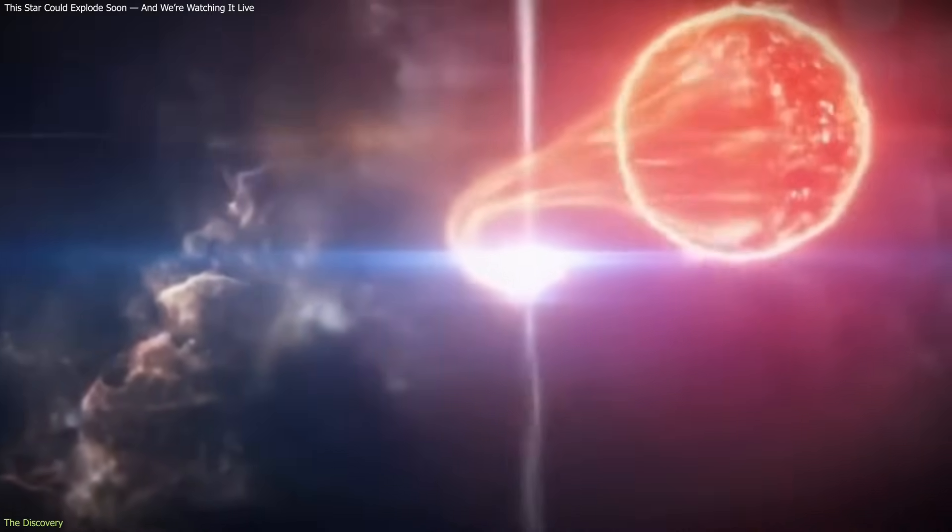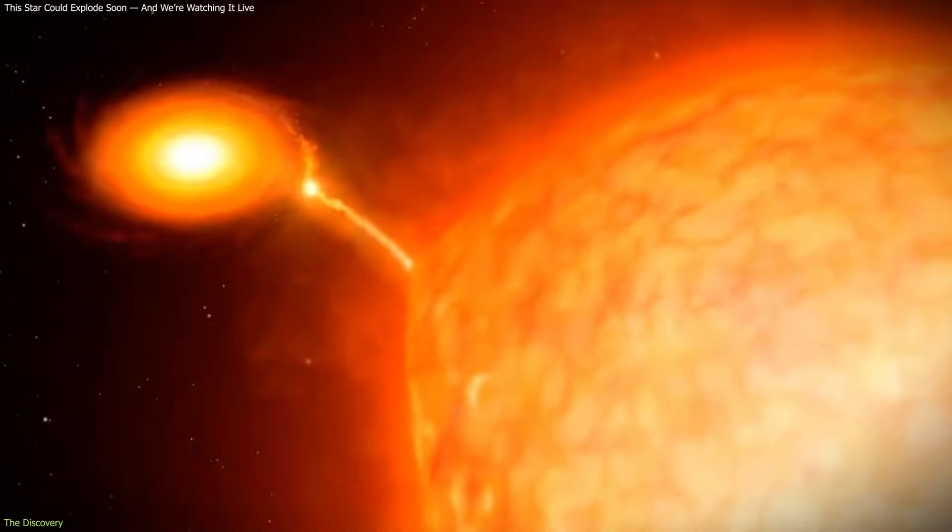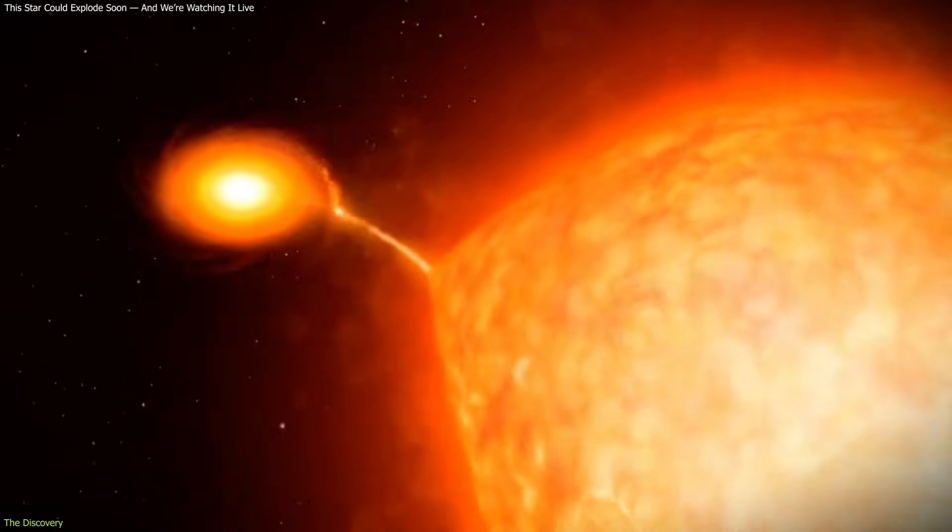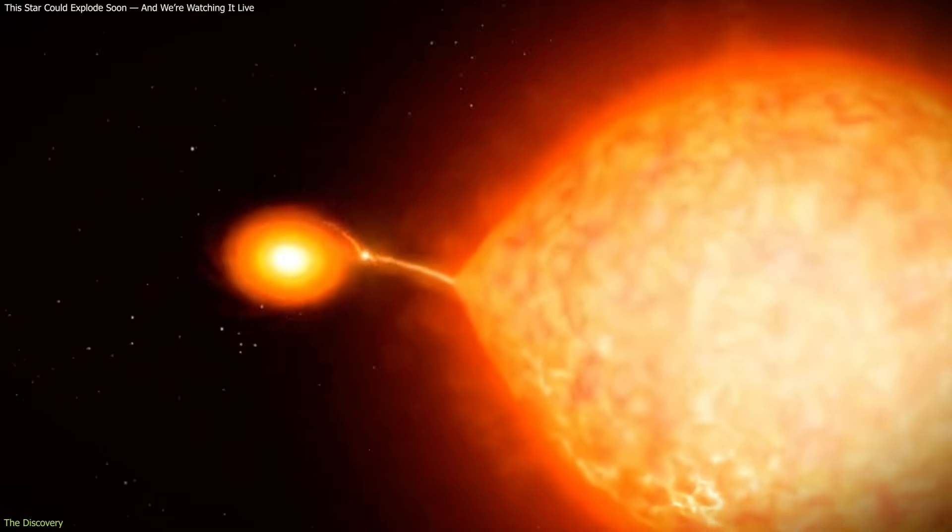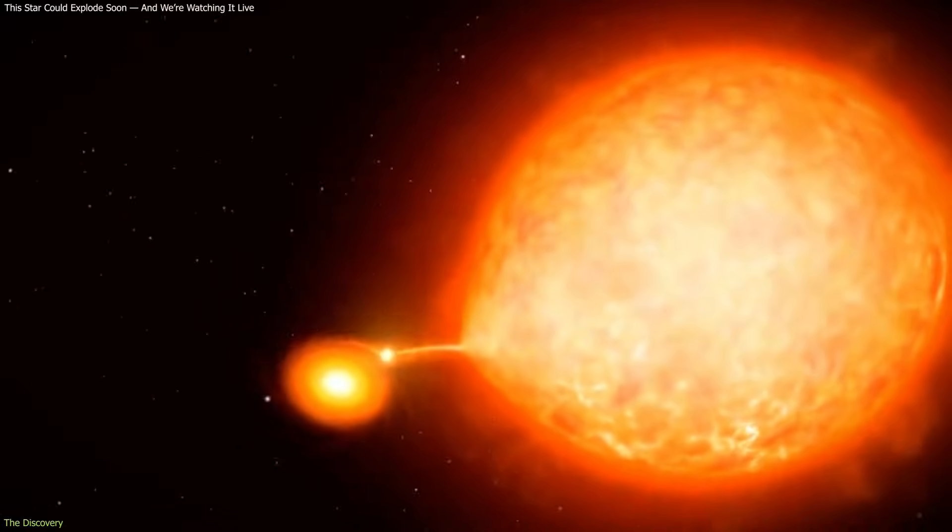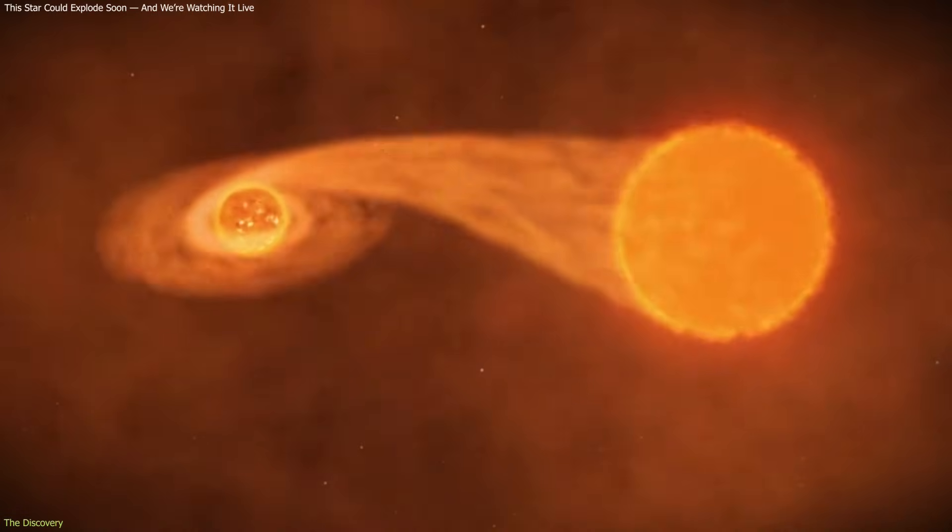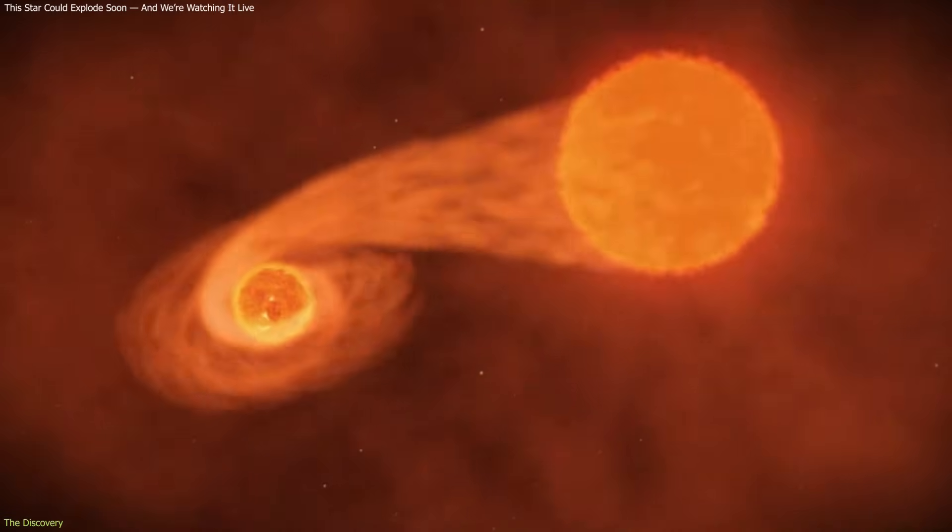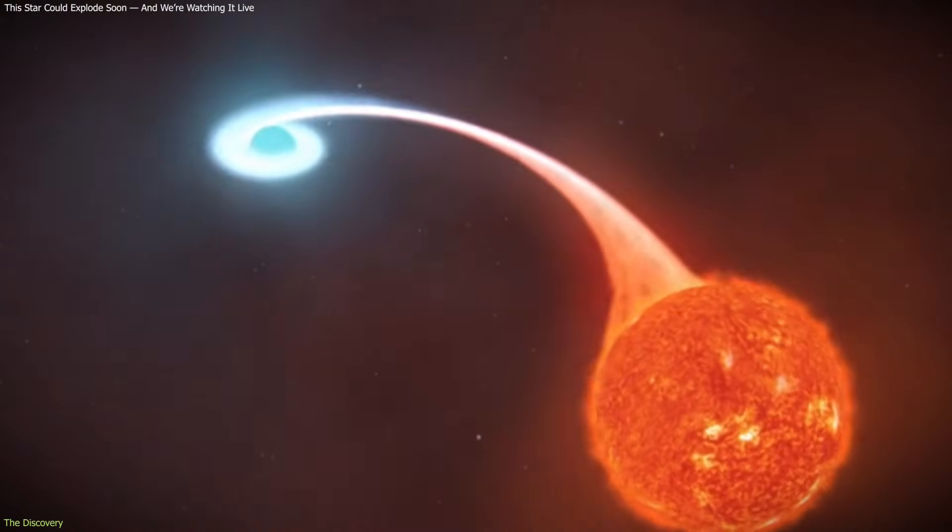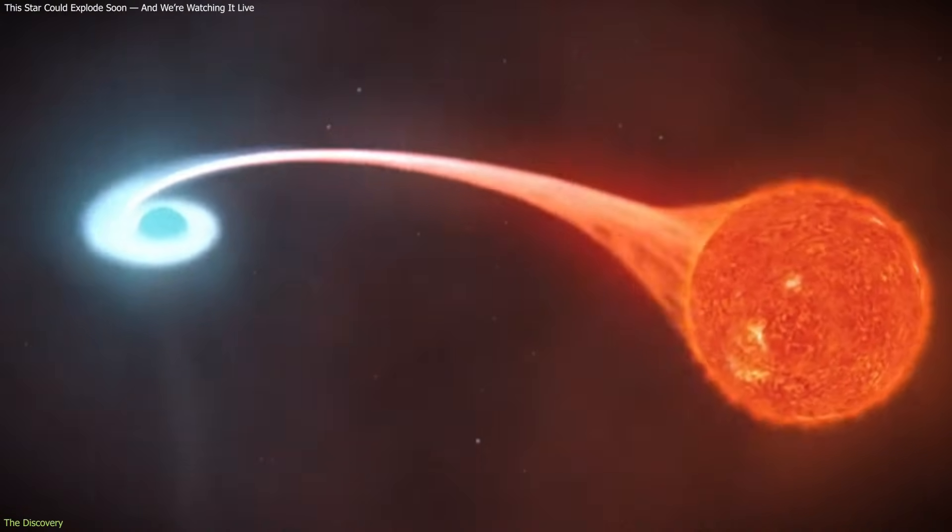These data show that the white dwarf is accreting material from its companion at an extraordinarily high rate. In typical accreting binary systems, transferred material settles into a relatively stable disk around the white dwarf. In V Segatai, the inflow is so intense that the white dwarf cannot absorb all of the material efficiently. As a result, excess gas is expelled outward, forming a bright, ionized envelope surrounding both stars.